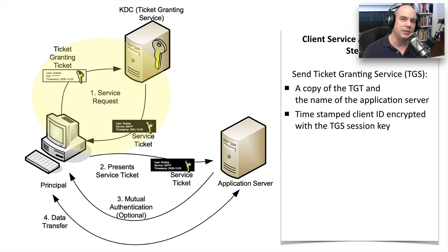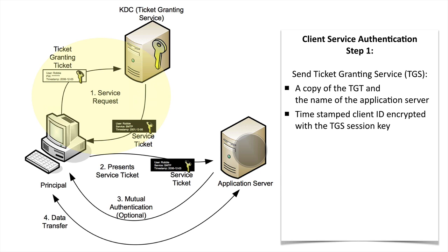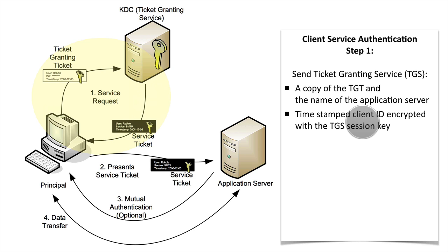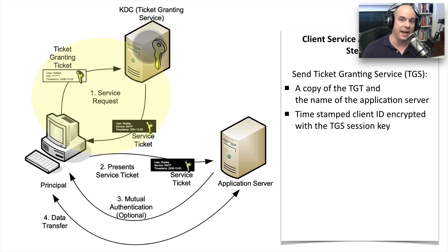Now that I've been authenticated, I'd like to use resources on the network — specifically, an application server. But the application server has never communicated with the Ticket Granting Service and has no idea I'm on the network. I need to get a ticket from the Ticket Granting Service to gain access to that application server. From our client workstation, I take that encrypted Ticket Granting Ticket, attach the name of the service I'd like, and send that to the Ticket Granting Service, along with a timestamp and client ID encrypted with my session key. The Ticket Granting Service can decrypt its own ticket and also decrypt the TGS session key using the known password hash.